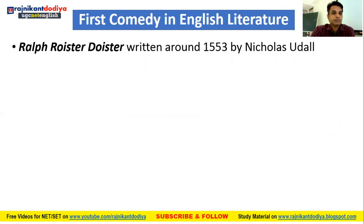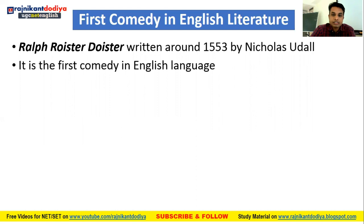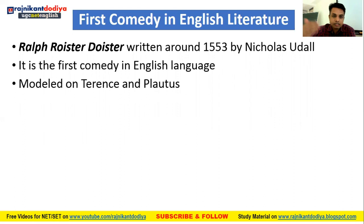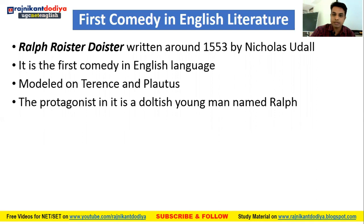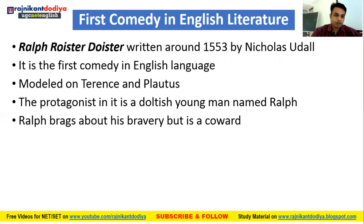First, when we talk about the first comedy in English literature, we have the name Ralph Roister Doister, written around 1553 by Nicholas Udall. It is the first comedy in English literature, modeled on the classic playwrights Terence and Plautus. The protagonist is a boastful young man named Ralph, who is the hero of this particular play.